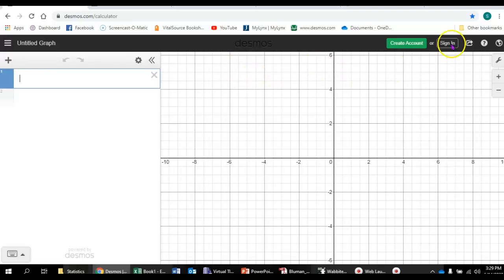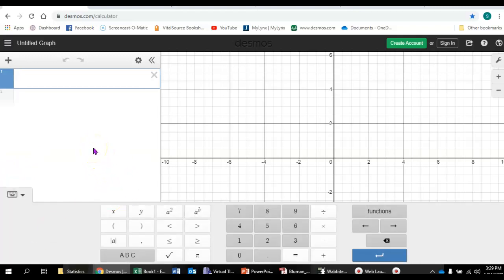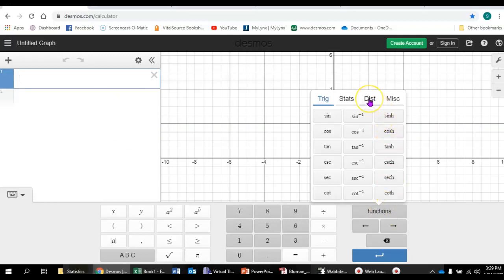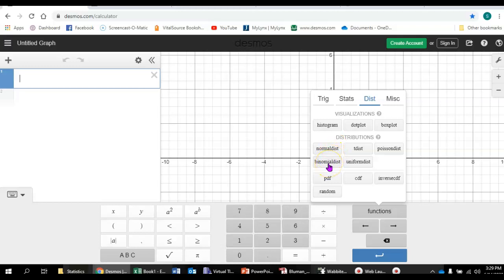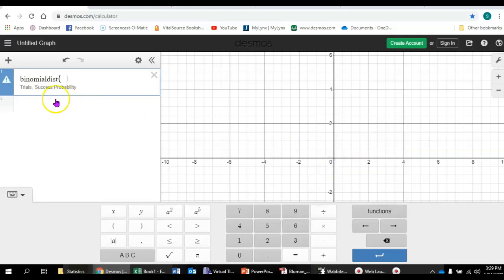I've also told you about the Desmos graphing calculator app that you can get for your phone, or you can go to online in a web browser. And it has this kind of a function built into it. So, to find the binomial probability on Desmos, here's how that would look. I would hit Functions. This would be under D-I-S-T for Distributions. And there it is, Binomial Dis. So, I'm going to select that. And it wants me to put in just two numbers, the number of trials and the success probability. So, in the example we've been doing, the number of trials was